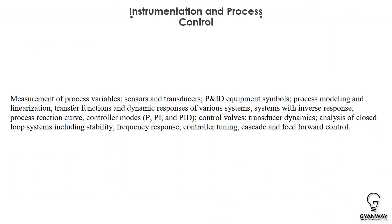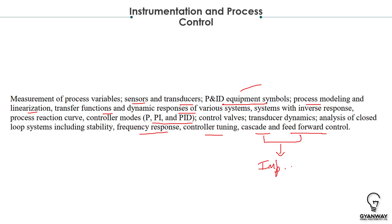Instrumentation and Process Control is a very easy subject — no major numerical calculations are involved, and questions are very basic in nature; you just need to understand the concepts. Topics include sensors, transducers, P&ID equipment symbols, process modeling and linearization, transfer functions, dynamic response, PPI and PID controllers, frequency response with Bode plots and root locus, stability criteria, controller tuning, cascade control, and feedforward control. It has a weightage of around 8 to 10 marks.